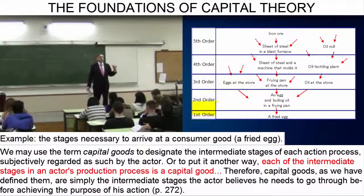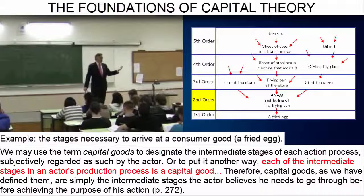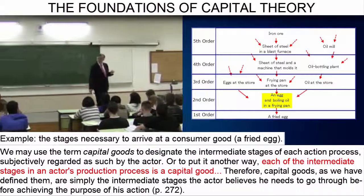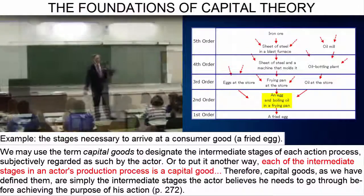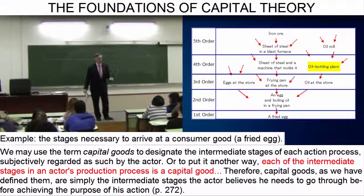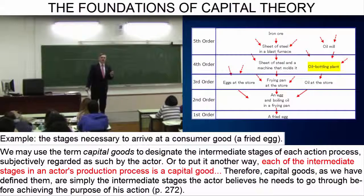Now, we come to second-order economic goods, which make up the stage immediately prior to final consumption. We have the cracked egg we are about to drop into the boiling oil, and we can go further back — our frying pan is still at the store, and the oil is being bottled.